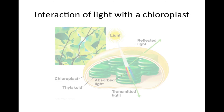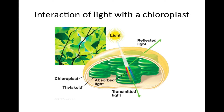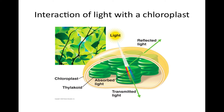Interaction of light with a chloroplast: light-absorbing molecules called pigments, built into the thylakoid membranes, absorb some wavelengths of light and reflect green light. We do not see the absorbed wavelengths — their energy has been absorbed by pigment molecules. What we see when we look at a leaf are the green wavelengths that the pigment transmits and reflects. Chloroplasts also contain a family of pigments called carotenoids, which seem to be used in photoprotection. They absorb and dissipate excessive light energy that would otherwise damage chlorophyll.